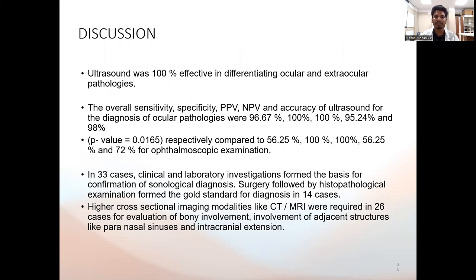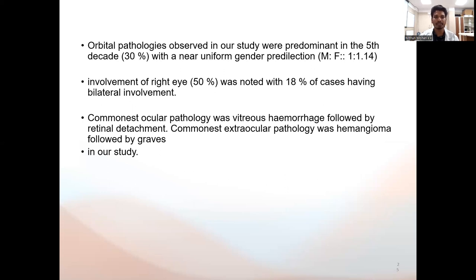Ultrasound was 100 percent effective in differentiating ocular and extraocular pathologies. The overall sensitivity and specificity were 96.67 percent, 100 percent, 100 percent, 95 percent and 98 percent respectively. In 33 cases, clinical and laboratory investigations formed the basis for confirmation of sonological diagnosis, while surgery followed by histopathological examination formed the gold standard in 14 cases. Orbital pathologies were predominant in the fifth decade with near uniform gender distribution. Right eye involvement was seen in 50 percent of cases with 18 percent having bilateral involvement. The commonest ocular pathology was vitreous hemorrhage followed by retinal detachment; the commonest extraocular pathology was in the intramuscular space followed by Graves' disease.